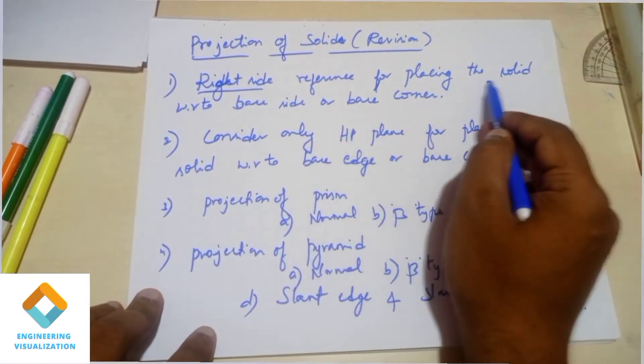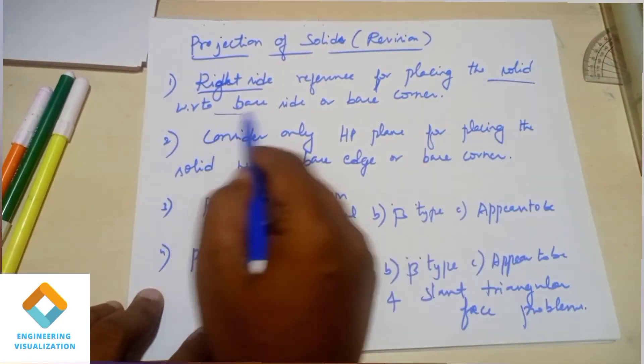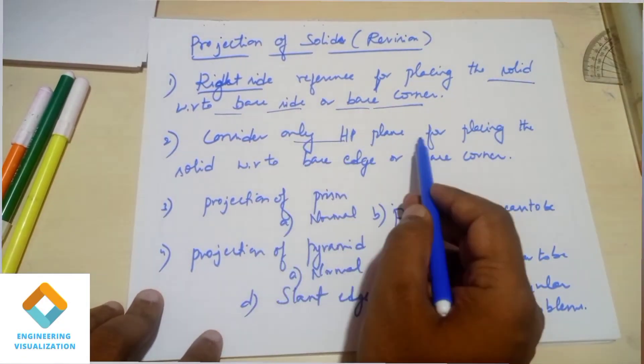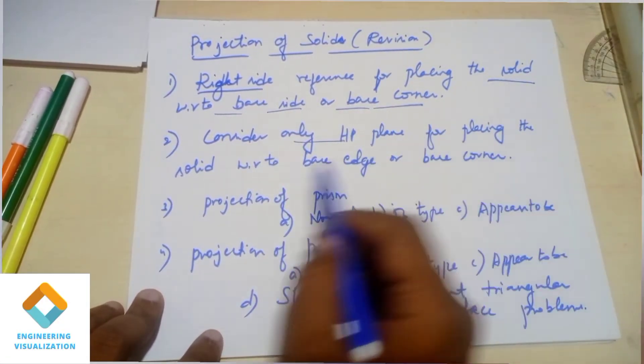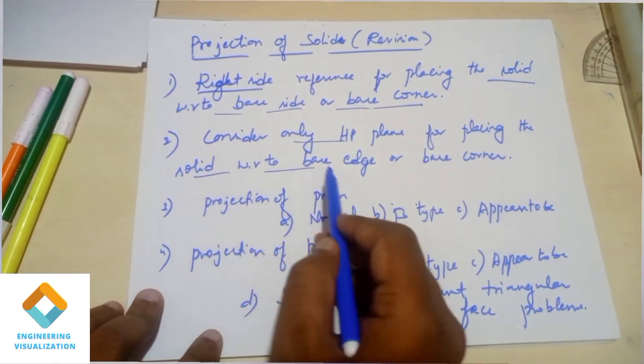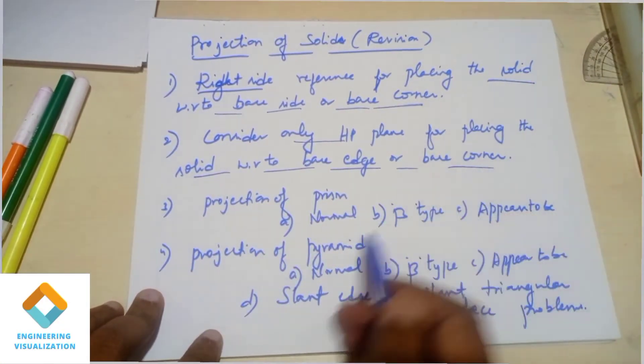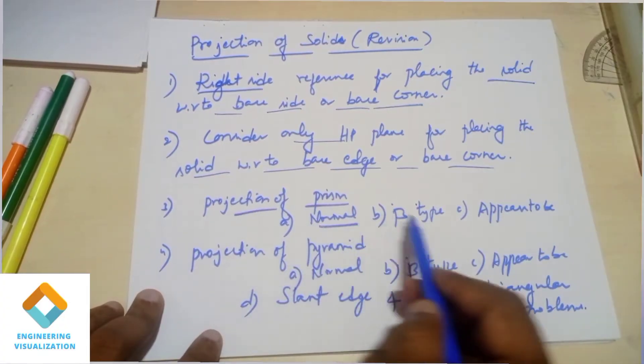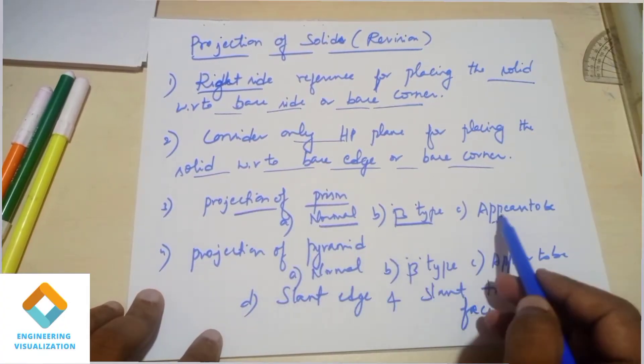Right-hand side reference — consider the first position: place edge, corner. Second: HP plane, consider to be solid.